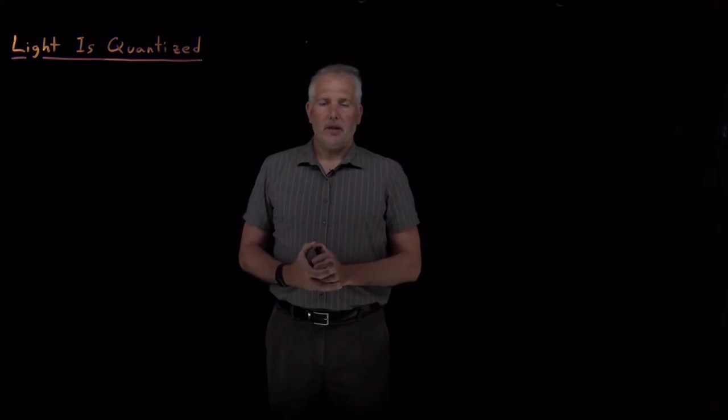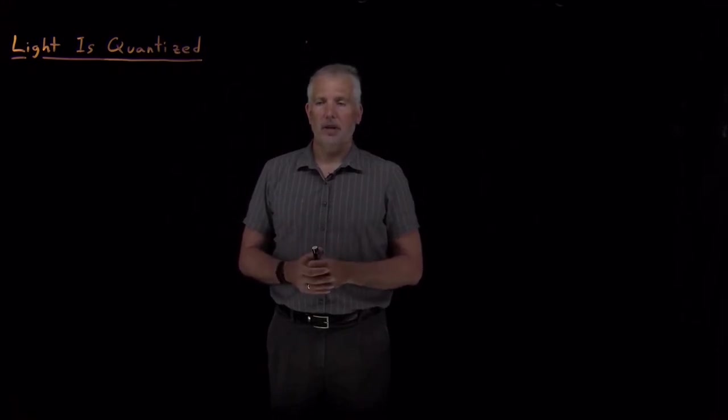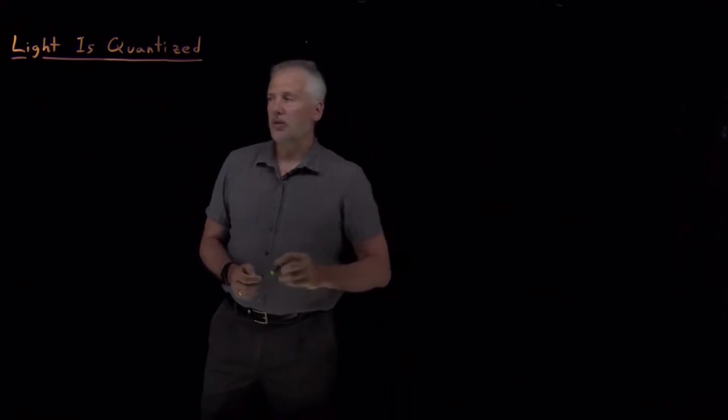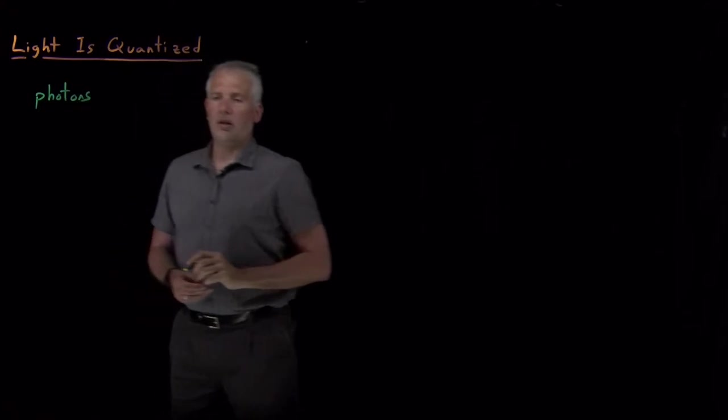So one thing we know about light is we normally tend to think of light as a wave. Light behaves like other types of waves like water waves and sound waves in that it can reflect off of objects, it can diffract or bend in different mediums, and it undergoes interference. Two different light waves can constructively or destructively interfere with one another. Those are all things that we think of as behaving like waves. But it turns out light is also made of particles. So it's not purely a wave, it's a wave that's made of particles, and the individual particles of light are called photons.